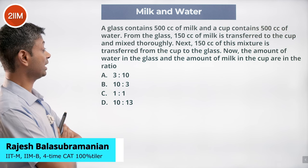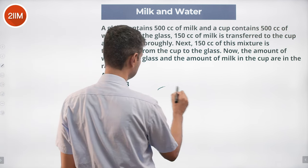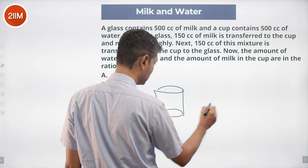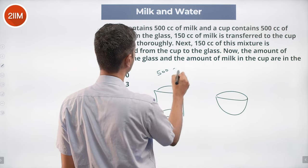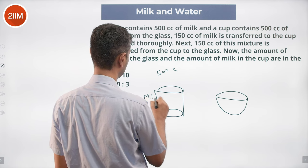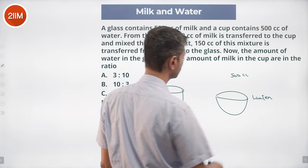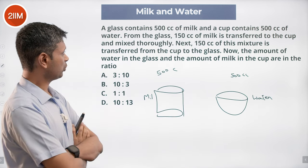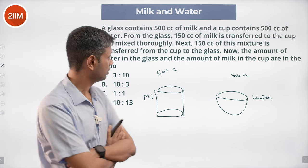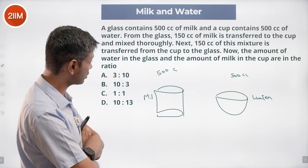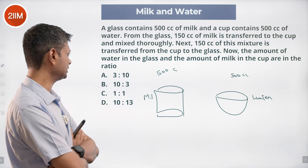A glass contains 500 cc of milk and a cup contains 500 cc of water. From the glass, 150 cc of milk is transferred to the cup and mixed thoroughly. Next, 150 cc of this mixture is transferred from the cup to the glass. Now, the amount of water in the glass and the amount of milk in the cup are in the ratio...